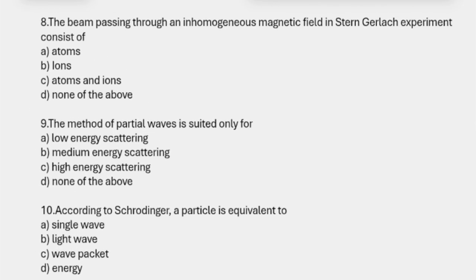Eighth one: the beam passing through an inhomogeneous magnetic field in Stern-Gerlach experiment consists of atoms.